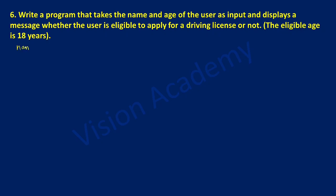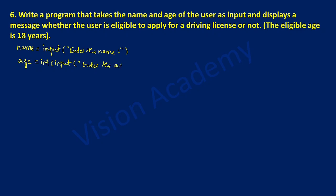Let us take a variable called name and use the built-in input function to ask the user to enter the name in double quotation marks. Now we will ask the user to enter the age, which will be stored in a variable called age. Since age is of type integer, we use int() around the input function. If we take simply input, by default it takes string — name is string type hence only input function is used there. In double quotation marks we will ask the user to enter the age.